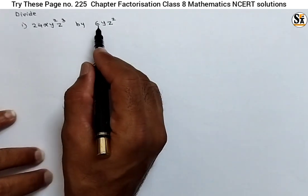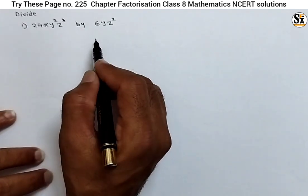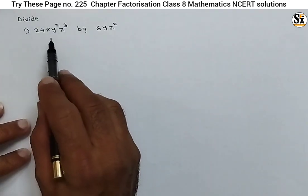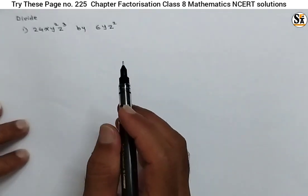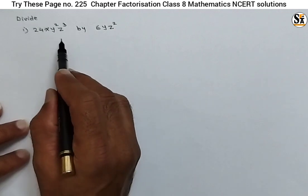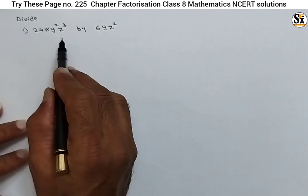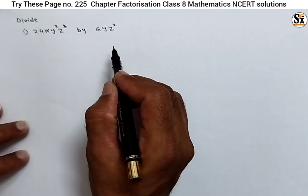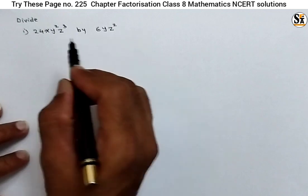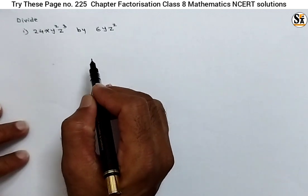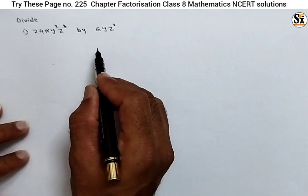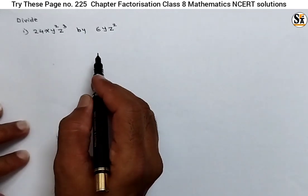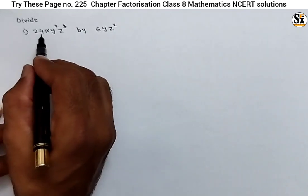Now to make the division of any algebraic expression, we follow the same rule. To make the division of algebraic expressions, we will first factorize the expression. We will make the irreducible factors of that expression so that we can cancel the common factors, which makes it easy to get the answer.